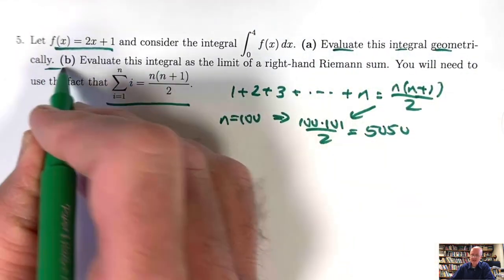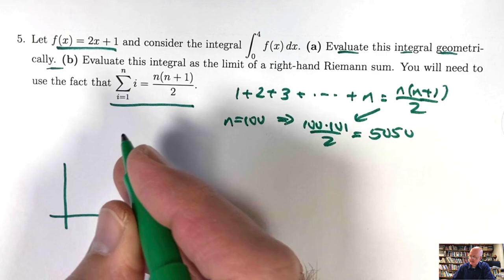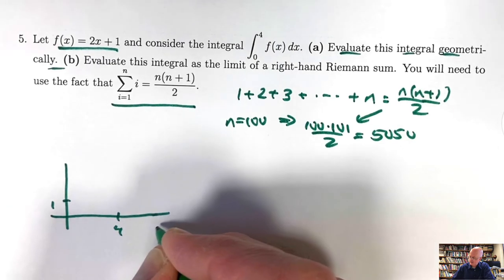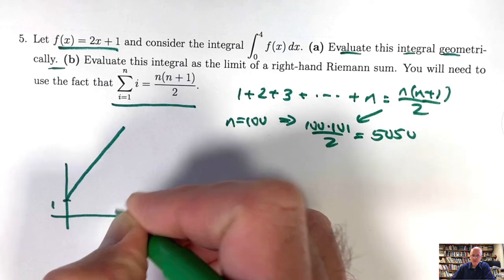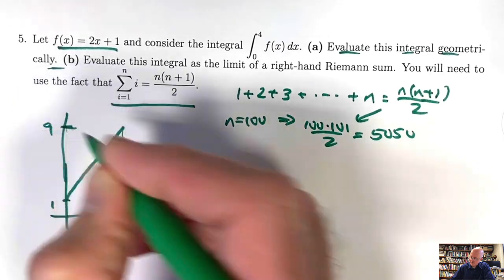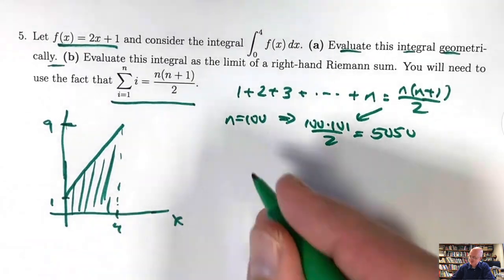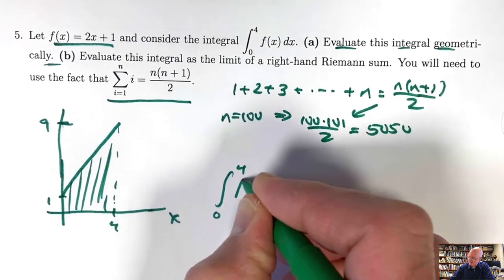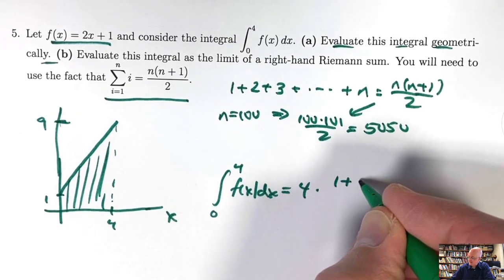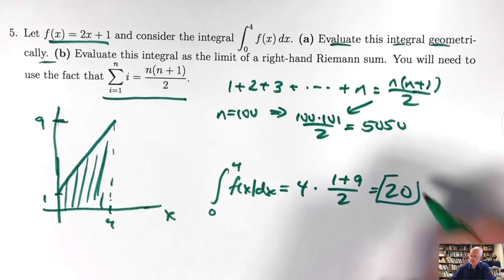Let's do part A: evaluate the integral of 2x plus 1 from 0 to 4 geometrically. Drawing this line with slope 2 and y-intercept 1, at x equals 4 the value is 9. We need the area of this trapezoid. Using the trapezoid formula: base times average of heights equals 4 times (1 plus 9) over 2 equals 4 times 5 equals 20. The exact value of the integral is 20.